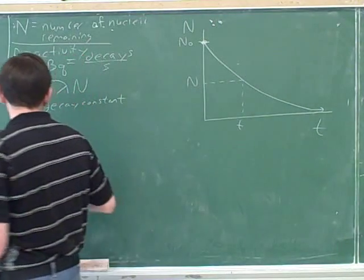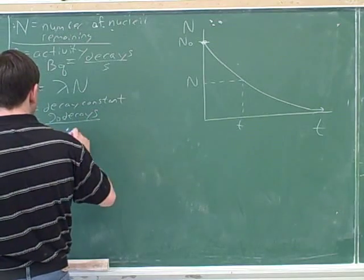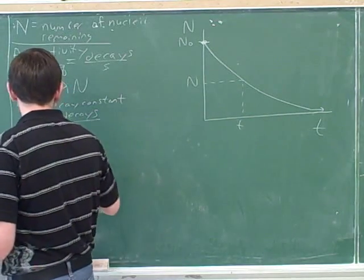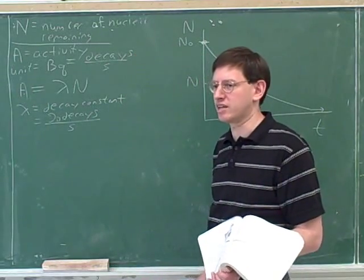So we can interpret lambda as the percent decays per second. Roughly speaking, it tells us the percent that's decaying per second.